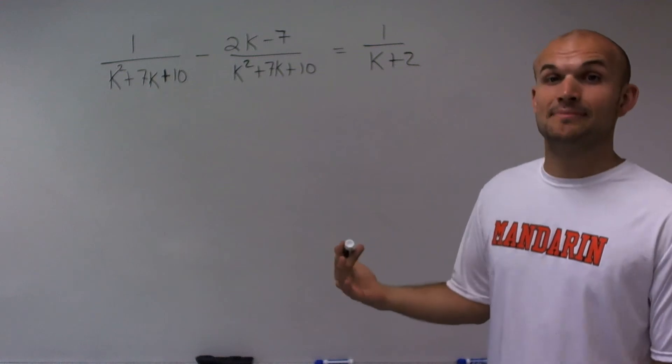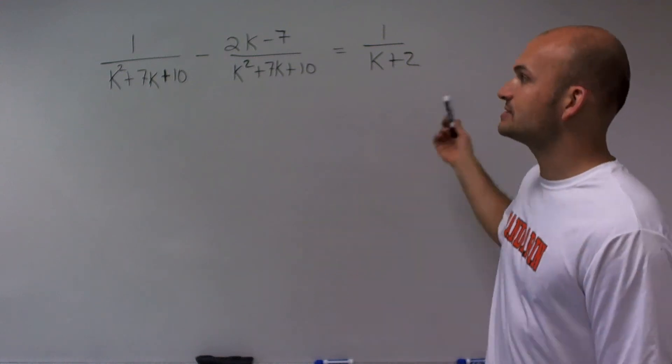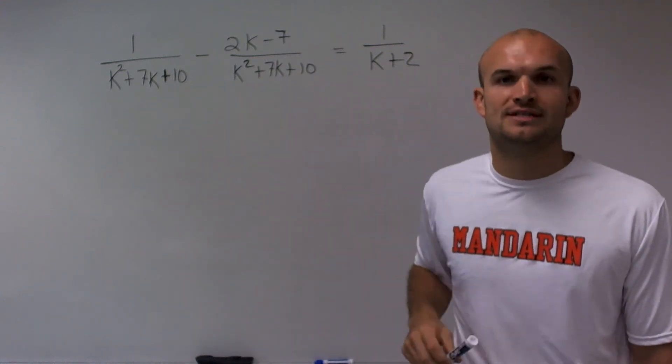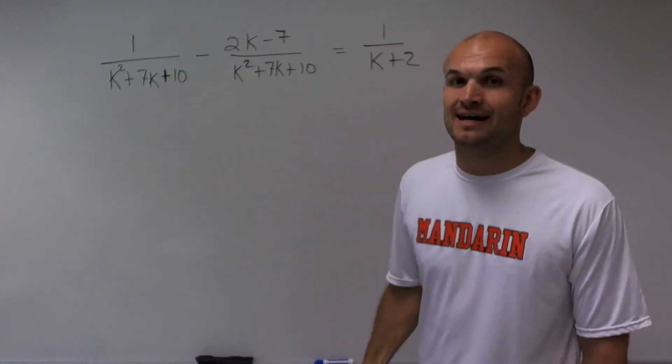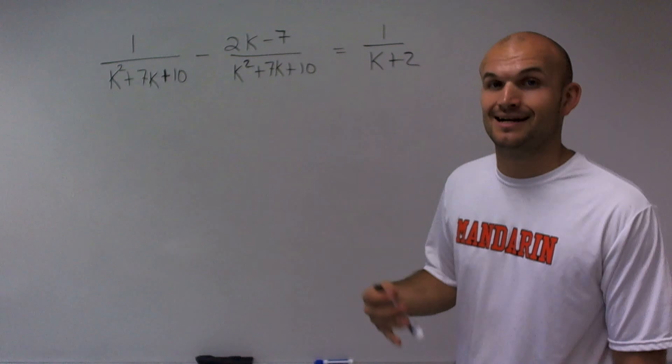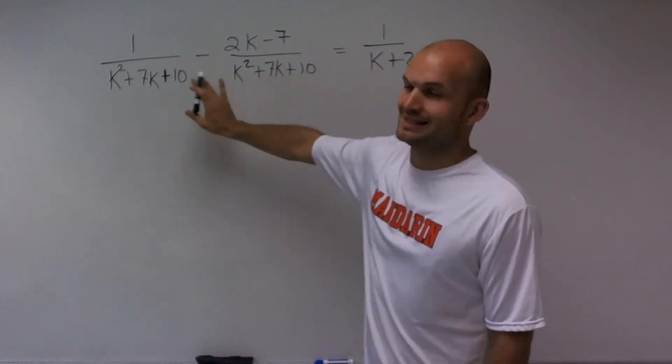And to find that, just a common denominator, a helpful tip is you can just multiply all your denominators. You're not going to want to multiply all these denominators to find a common denominator. It's not going to be helpful. However, we notice that these two are the same, right?